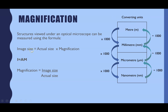You also need to be able to convert units, because your image size — measured from the micrograph with a millimetre ruler — will be in millimetres, while the actual size of cells and organelles is in micrometres. Both must be in the same units to use the formula. To convert millimetres to micrometres, multiply by 1000. For example, 2 mm = 2000 µm. Conversely, divide by 1000 to go from micrometres back to millimetres.